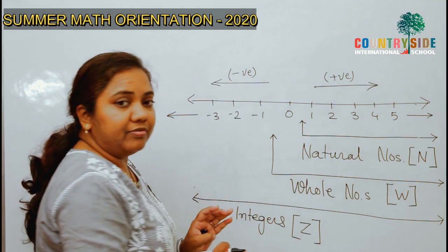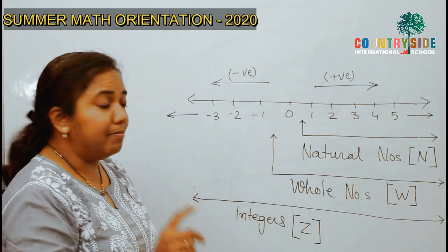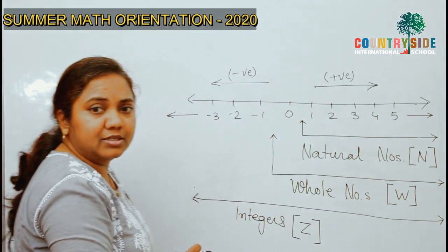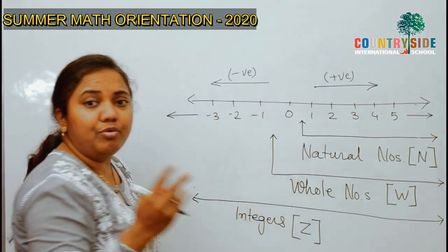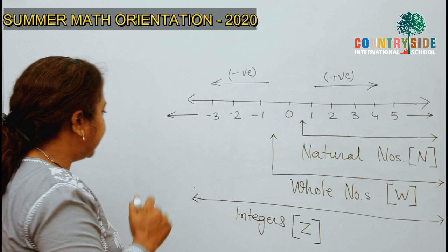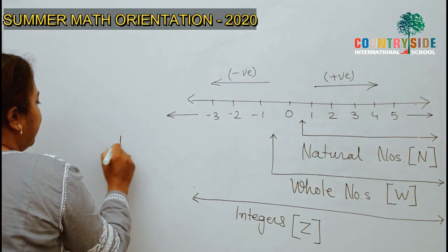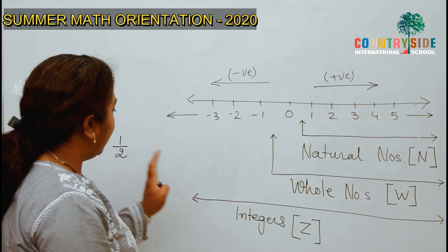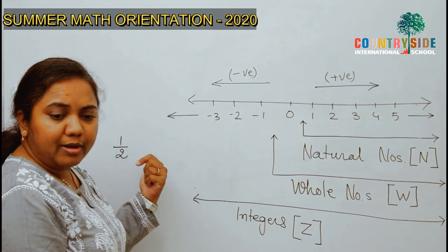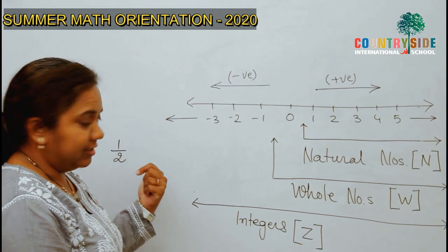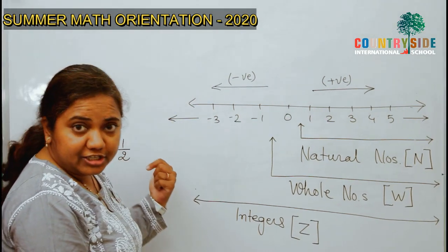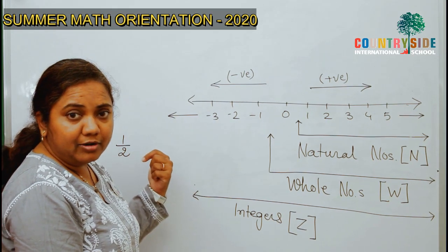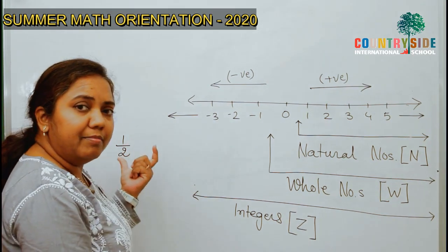Okay. So, now, if I want to represent a number in between two whole numbers or in between two integers, for example, 1 by 2. So, 1 by 2. This is not a whole number. Right? This is not an integer. Obviously, it is not a natural number. So, where to show these numbers.